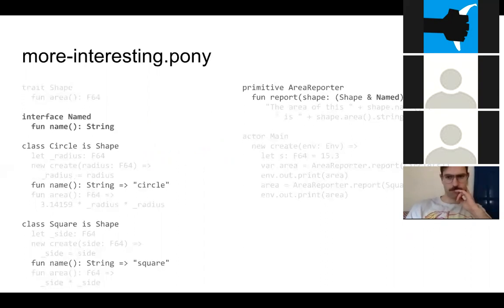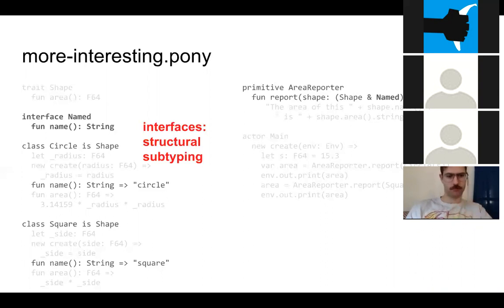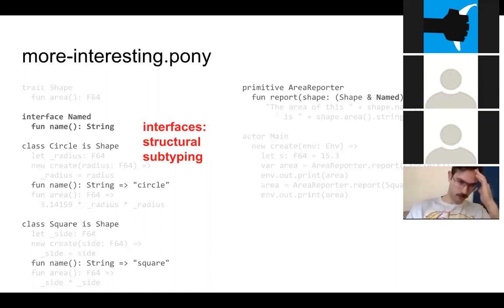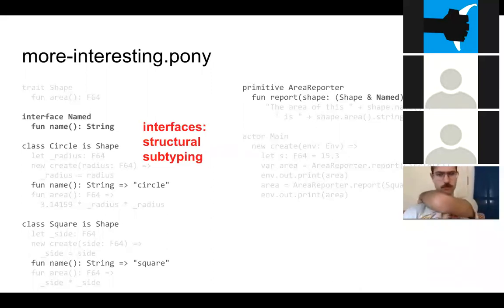The next thing we have is interfaces — we have a named interface. Interfaces give us structural subtyping, which means we don't have to explicitly say a class is of this type. As long as we implement the function specified in that interface, we are automatically of that type. The circle and square classes both implement a name function that returns a string, so they implement the named interface even though they don't explicitly specify it. This gives you something not exactly like duck typing, but more flexibility when creating object hierarchies.